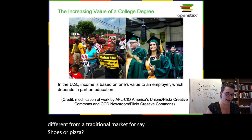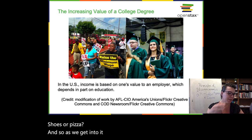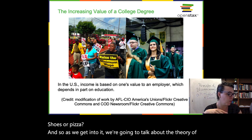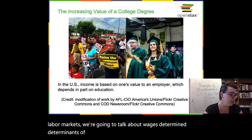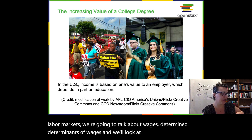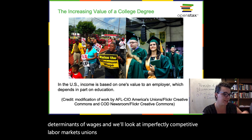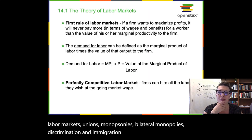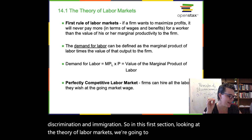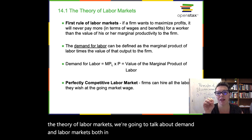We're going to talk about the theory of labor markets, wages, determinants of wages, and we'll look at imperfectly competitive labor markets, unions, monopsonies, bilateral monopolies, discrimination, and immigration. In this first section, looking at the theory of labor markets, we're going to talk about demand in labor markets both in a perfectly competitive and an imperfectly competitive situation.